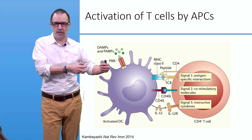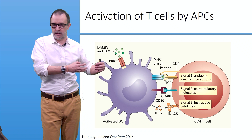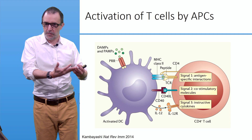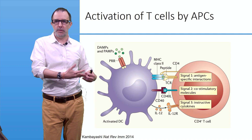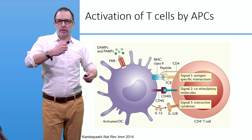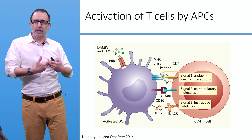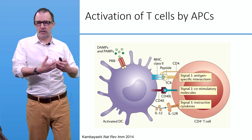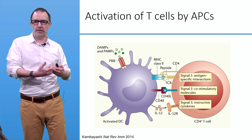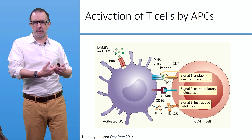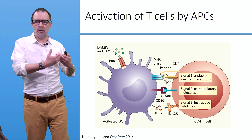A second level of signaling is needed to activate T cells — called co-stimulatory molecules, for example the interaction between the CD40 receptor and CD40 ligands. And this is still not enough. A third level of signaling — instructive cytokines — will tell the T cells what to do. This illustrates that this is a multi-sequential, multi-parametric, multi-level process. The fact that therapeutic ultrasound can increase the release of tumor antigens is important, but that's not enough to trigger an anti-cancer immune response.